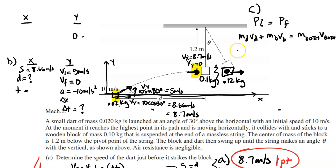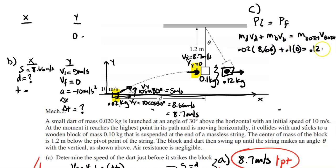Plugging in numbers: 0.02 × 8.66 + 0.1 × 0 = (0.02 + 0.1) × V_both. The second term is zero since the block is at rest. Solving, V_both = 1.44 meters per second.